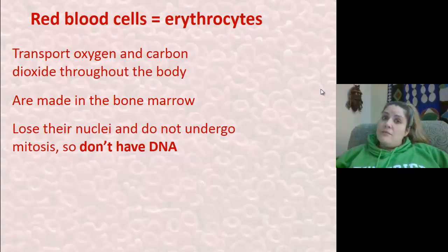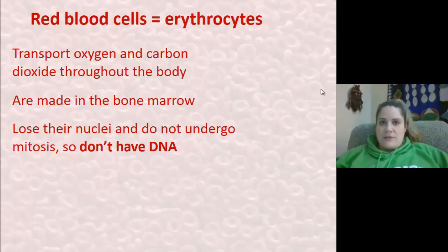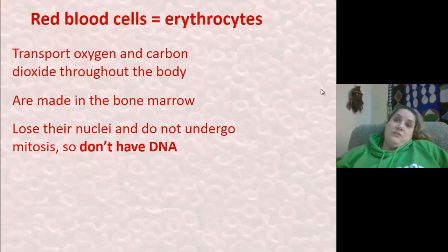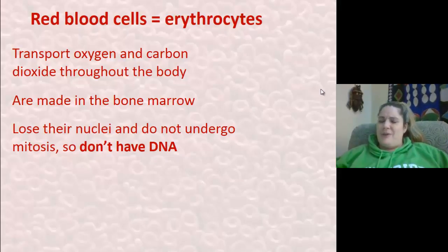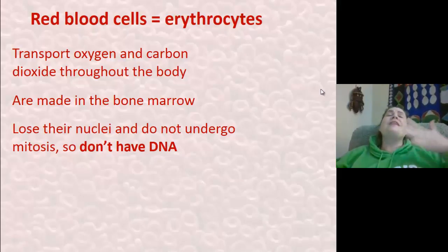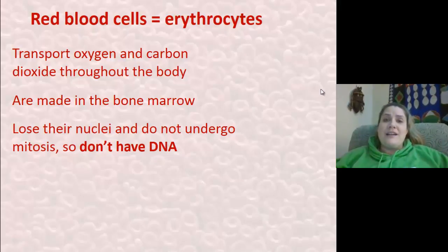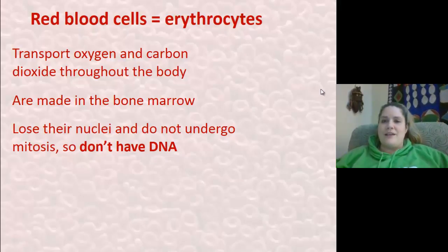That's because red blood cells, as they mature, lose their nuclei. And since they lose their nuclei, they can't undergo mitosis — there's just nothing, it just wouldn't happen. Since they don't have nuclei, they don't have DNA. Red blood cells don't have DNA? But wait — if somebody wants DNA, they're going to draw blood, and that's where they get the DNA from. Aha — just wait a minute and I will address that issue.